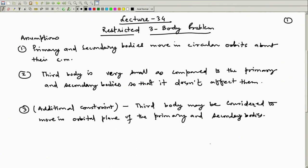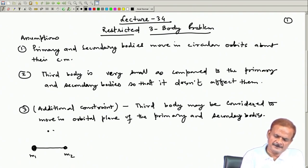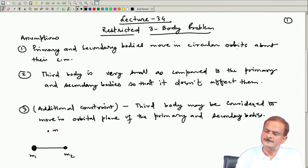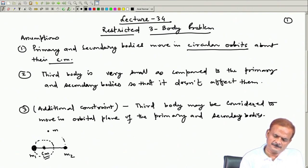The first assumption we make is that the primary and the secondary bodies move in circular orbits about their centre of mass. So we have one mass m1 here and another mass m2 here, and the third body has mass m. The centre of mass lies between them, and about this centre of mass the primary and secondary bodies move in circular orbits, always opposite to each other.